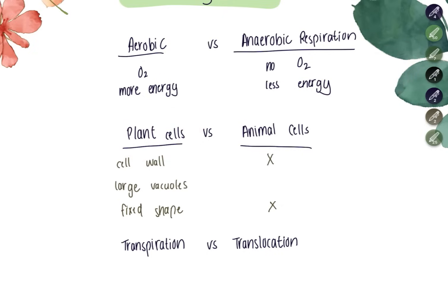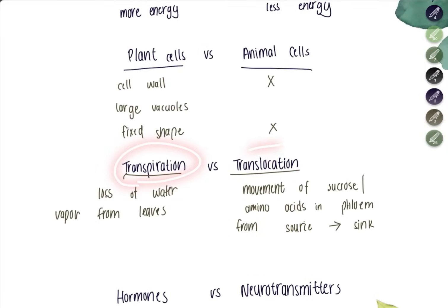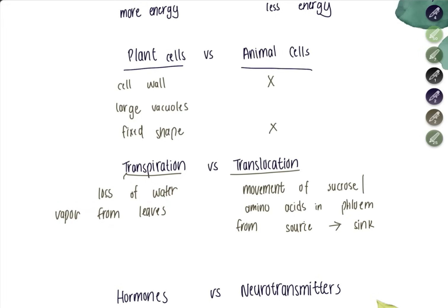Transpiration is the loss of water vapor from the leaf — water evaporates from the surface of mesophyll cells into air spaces inside the leaf and then diffuses out through the stomata as water vapor. Translocation is the movement of food — either sucrose or amino acids — through the phloem from the source to the sink.